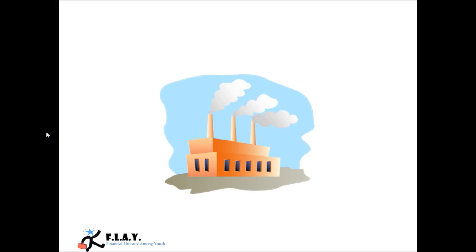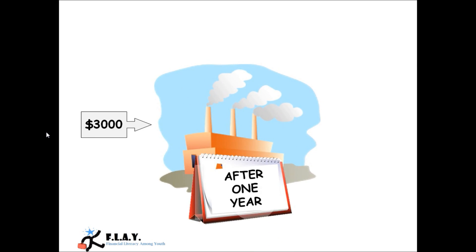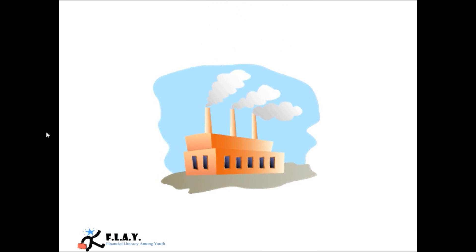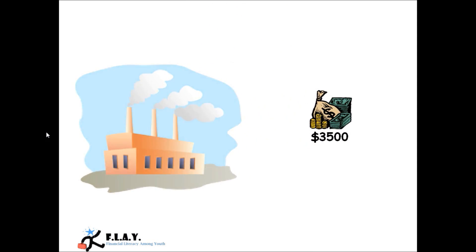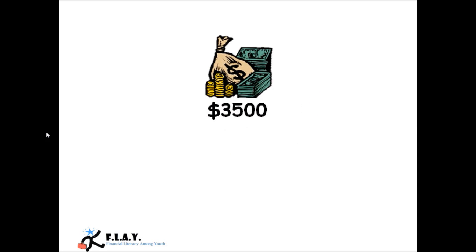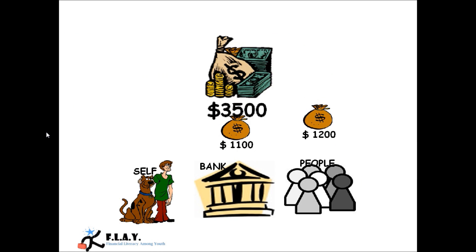At the end of the first year, this $3000 made a profit of $500, and hence he got $3500 in the end. He needed to decide how this money should be distributed. As promised to the bank, he had to give $1000 plus 10% interest on $1000, that is $100, hence $1100 to the bank. The rest of the money, that is $2400, was divided in the ratio in which he took the money. So he took $1200 and gave $1200 to the people.